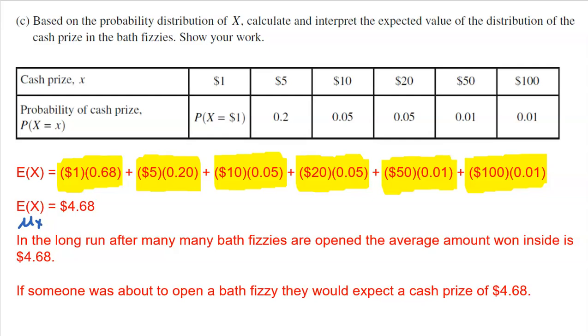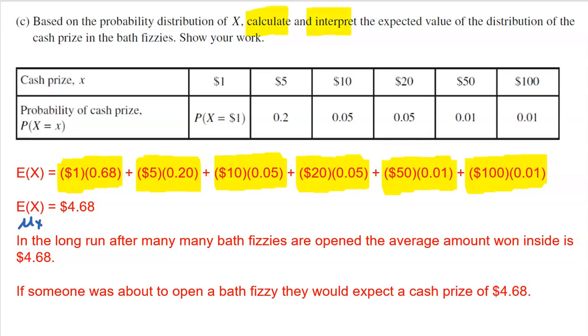Now it's important that you read the question. It says calculate and interpret. So if you just put 4.68 as your final answer, unfortunately you're not going to get full credit because they did ask you to interpret. So remember an expected value or a mean is what we expect in the long run. So in the long run, after many, many bath fizzies are opened, the average amount won inside is $4.68. So imagine if we kept a journal and every time we'd open up a bath fizzy, we wrote down how much we got.